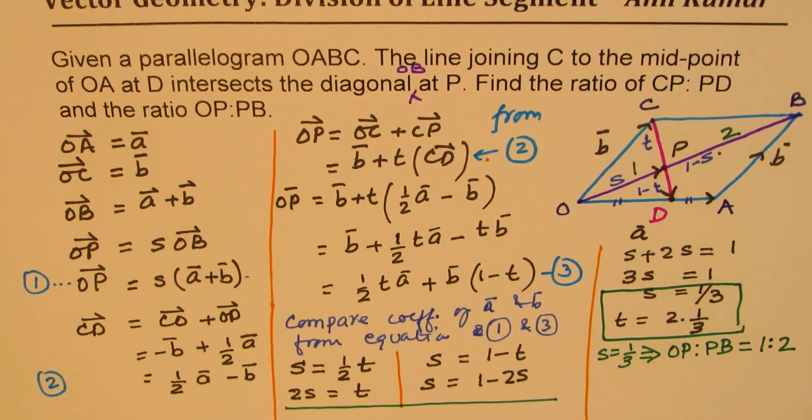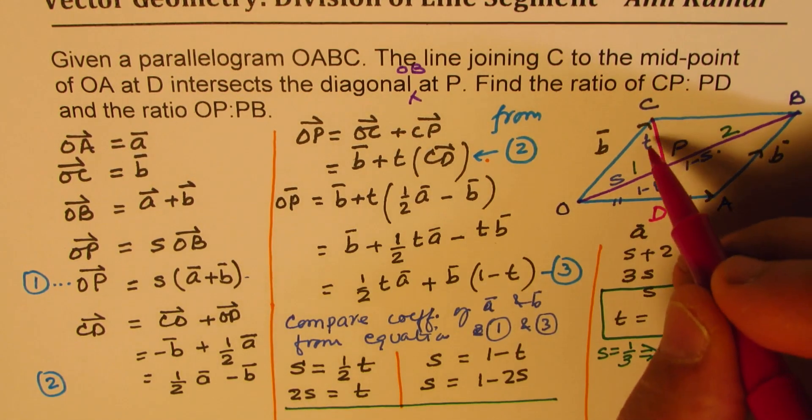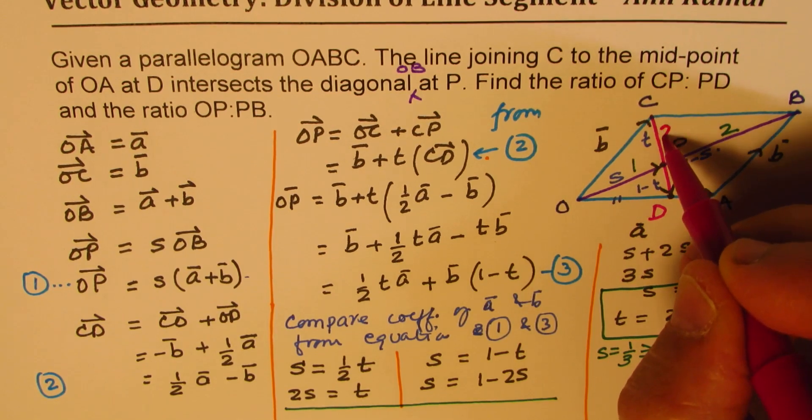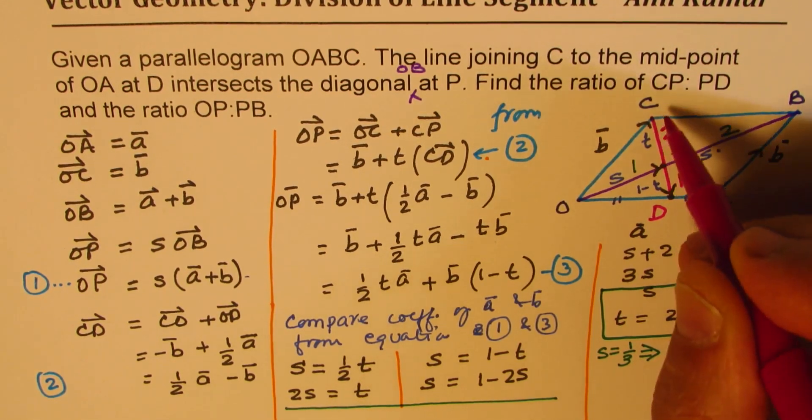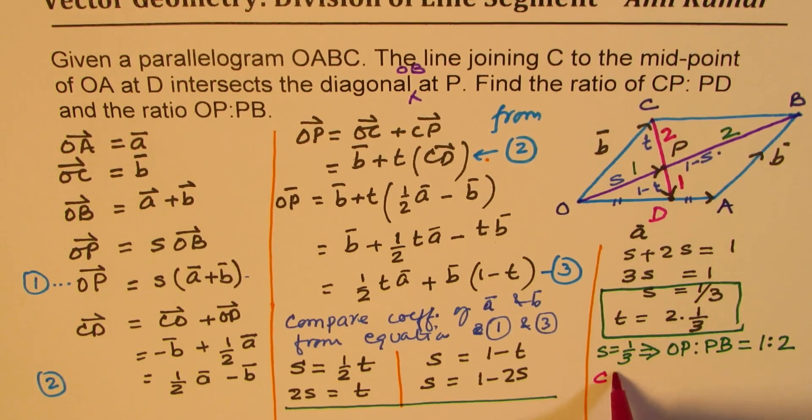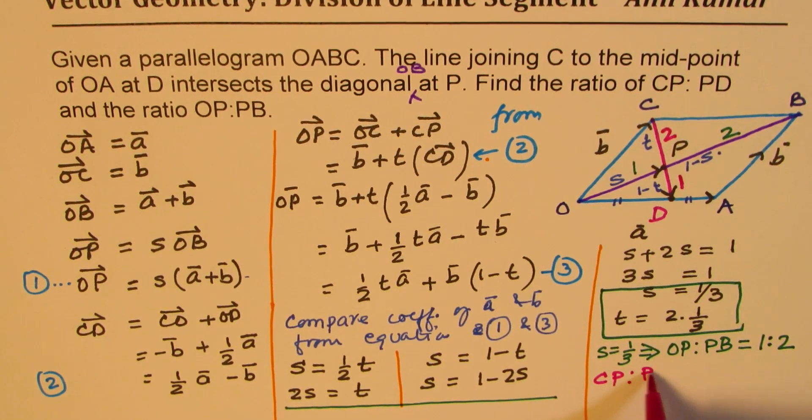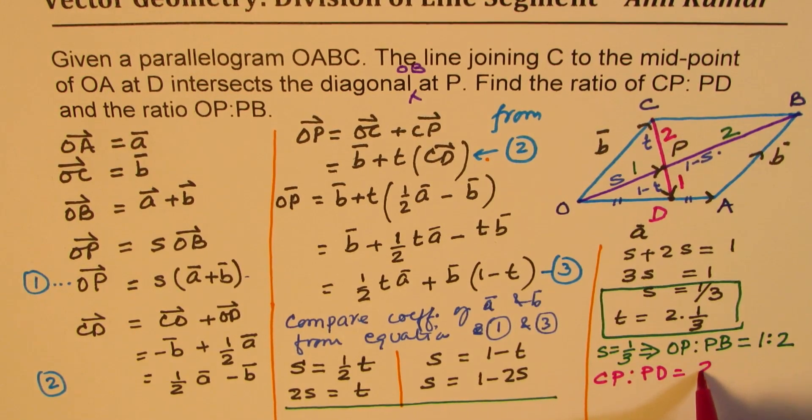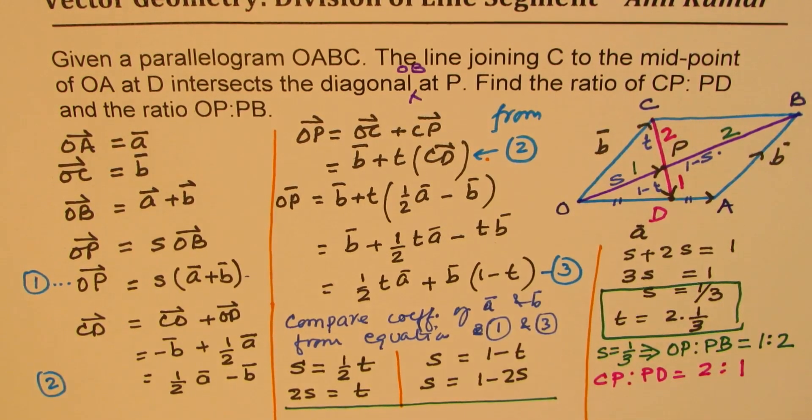Now, from the second equation, which is T is 2 thirds. Now, T is 2 out of 3. That means this is 2 and this is 1. So therefore, the ratio CP is to PD is equal to 2 is to 1.